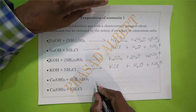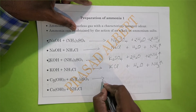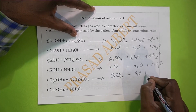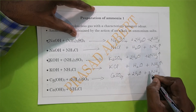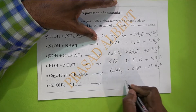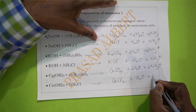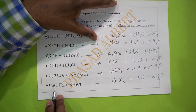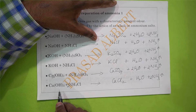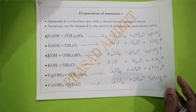Then we have the third alkali, calcium hydroxide, which is a divalent metal. Ammonium sulfate is also divalent, so here we get calcium sulfate plus water and ammonia — two molecules of water and two molecules of ammonia. It is balanced. Then calcium hydroxide with ammonium chloride gives CaCl₂, water, and ammonia. Since calcium is divalent we need two chlorines, so 2NH₄Cl, giving 2NH₃ and 2H₂O. Balanced.